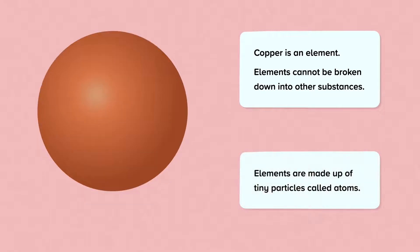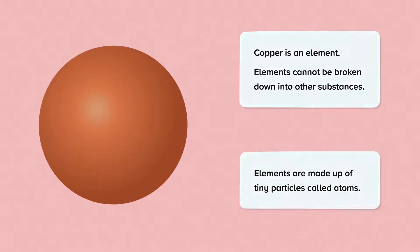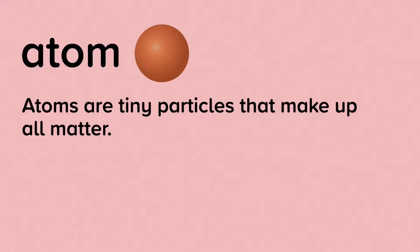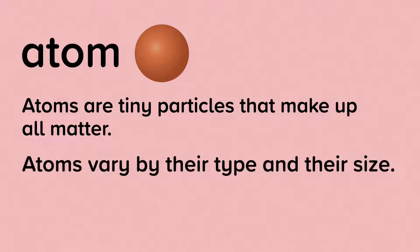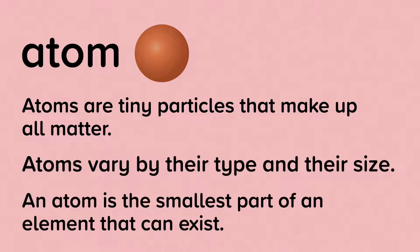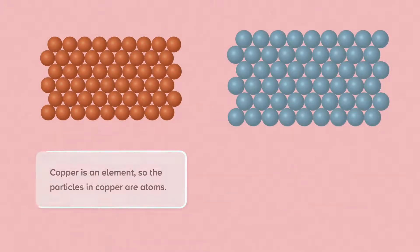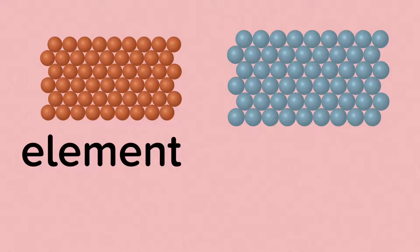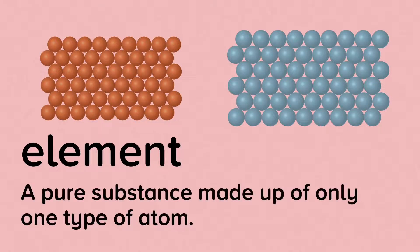Elements are made up of tiny particles called atoms. Atoms are tiny particles that make up all matter. Atoms vary by their type and their size. An atom is the smallest part of an element that can exist. Copper is an element, so the particles in copper are atoms. An element is a pure substance made up of only one type of atom.